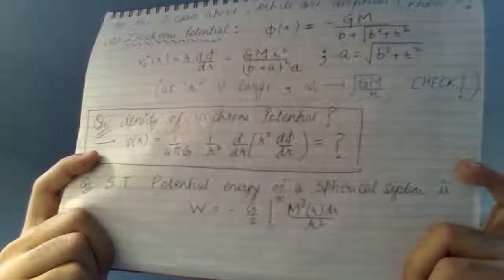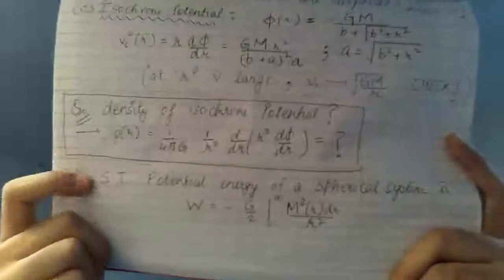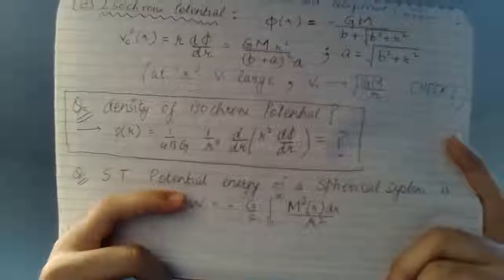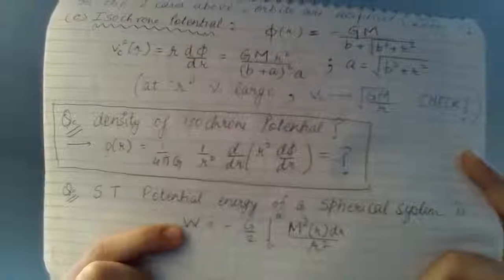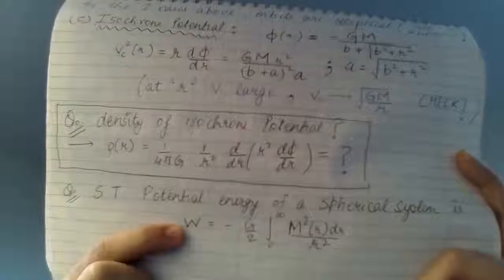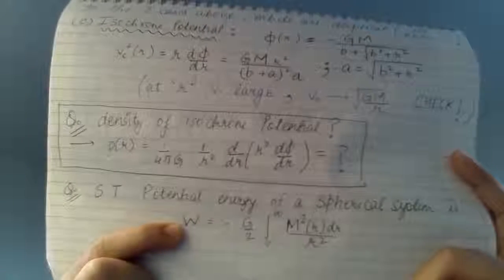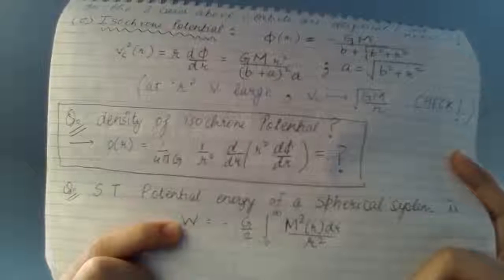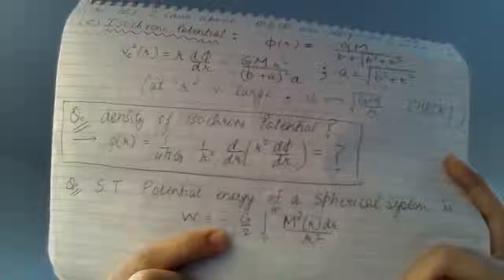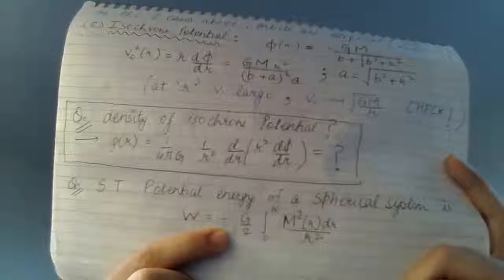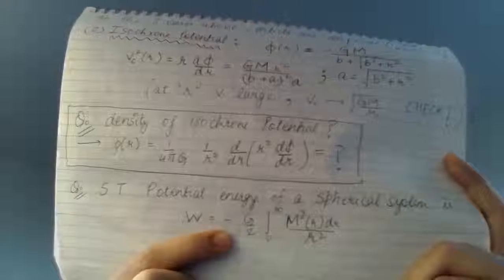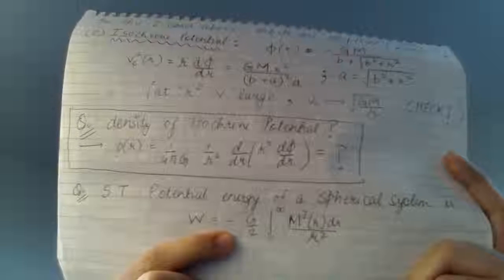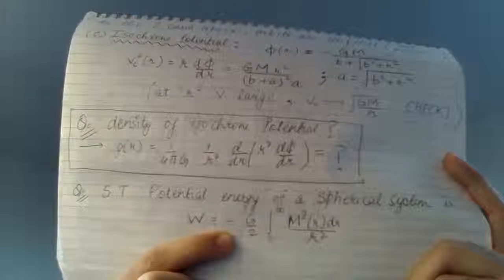Now let's do a numerical. Show that the potential energy of a spherical system is given by W = -(G/2) ∫₀^∞ M²(r)/r² dr. This is the work done in bringing all the masses from infinity together to form the system. You can pause the video here and try to solve it yourself.